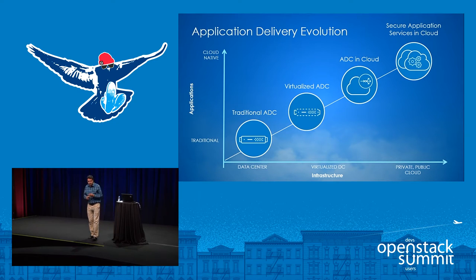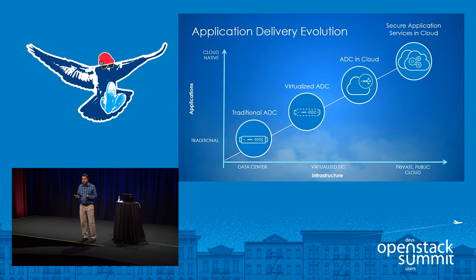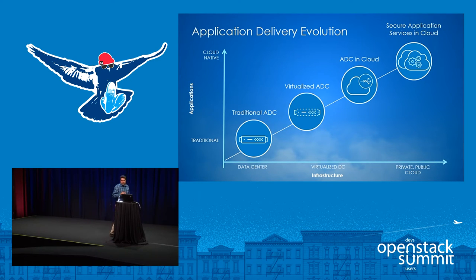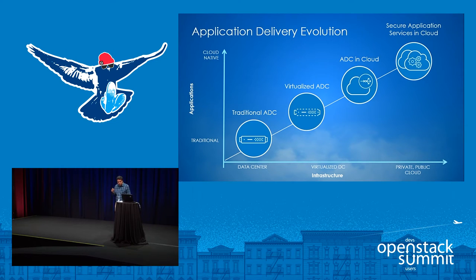The application delivery has evolved over the years. Applications have moved from the traditional data center and more and more are moving towards private and public clouds. IT is building out these new clouds. As applications go cloud-native, the implication for application networking services and application delivery controllers is that they need to integrate very well with the data center infrastructure to provide seamless integration and agility, ensure compliance, meet service level agreements, and deliver services to users.